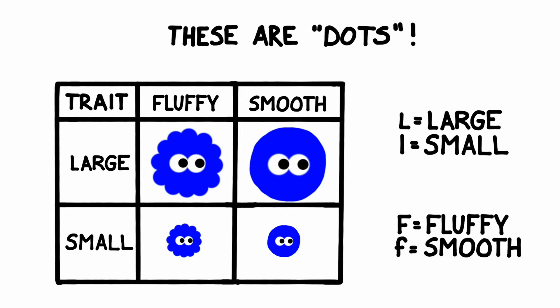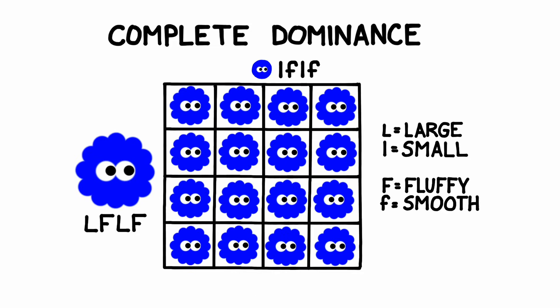In some of our previous videos, we used made-up creatures known as dots. Dots can be either large or small, and can have a fluffy or a smooth coat. The large and fluffy alleles were dominant over the small and smooth alleles. Therefore, a dot that had one copy of the large allele would be large in size, and one copy of the fluffy allele would mean that it would be fluffy in texture. We call this complete dominance.